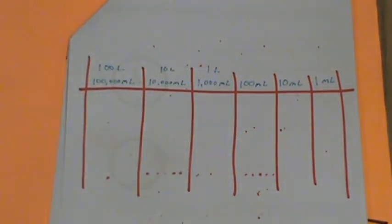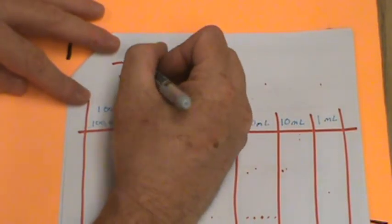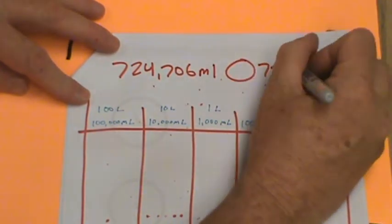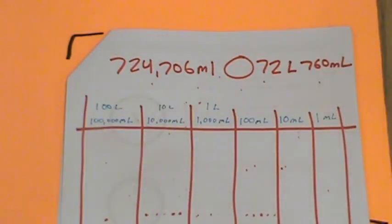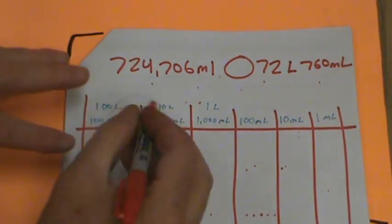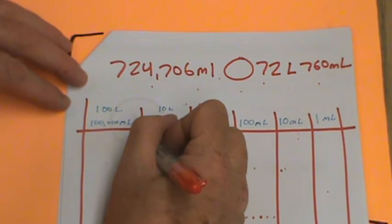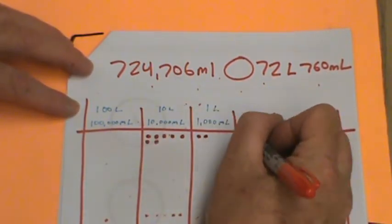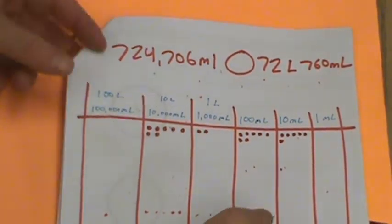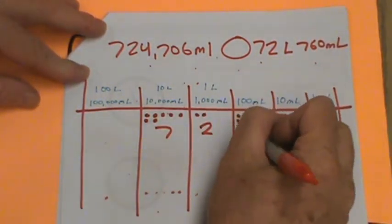700, and go ahead and write this down, 24,706 ml greater than or equal to 72 liters, 760 ml. So go ahead and write that down before we start. Excuse me. My alarm went off. That means my math lesson is running out of time. So let's see what we have. We have 72 liters, right? So I would do 70, 1, 2, 3, 4, 5, 6, 7, 2, 7, and 6, and 0. So we can see that this is 72 liters, 760 ml.